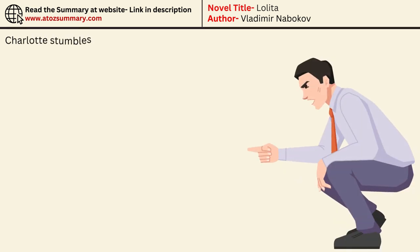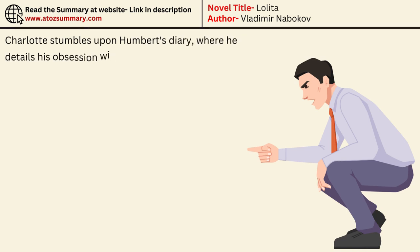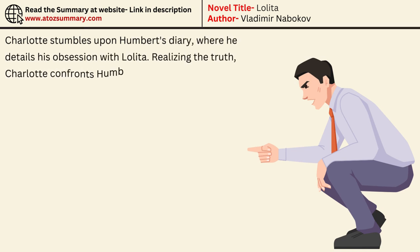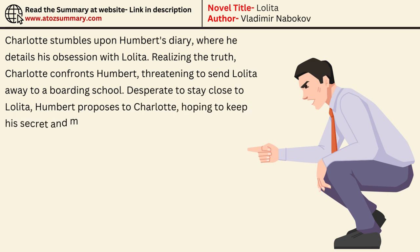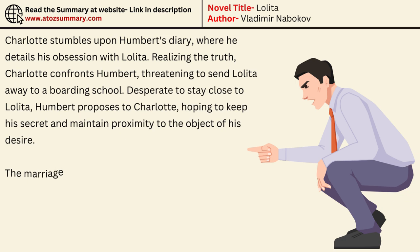Charlotte stumbles upon Humbert's diary, where he details his obsession with Lolita. Realizing the truth, Charlotte confronts Humbert, threatening to send Lolita away to a boarding school. Desperate to stay close to Lolita, Humbert proposes to Charlotte, hoping to keep his secret and maintain proximity to the object of his desire. The marriage becomes a tense charade.